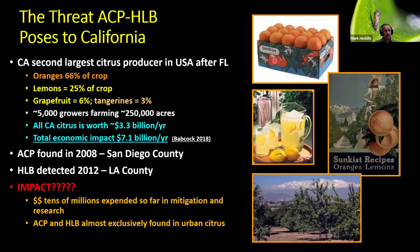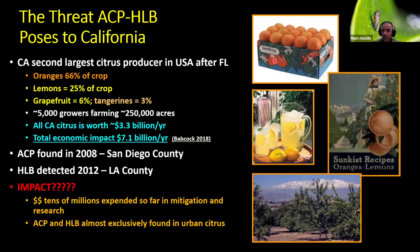Tens of millions of dollars have been spent in mitigation — trying to curb the spread of Huanglongbing and the psyllid throughout the state. A lot of money has gone into research to develop sustainable programs, not only to manage the psyllid and disease, but also in early detection and containment. Right now, the disease is almost exclusively limited to urban citrus, and most infestations of Asian citrus psyllid are largely confined to urban citrus as well, though there are some commercial growing areas that have psyllid populations with management programs targeting them.